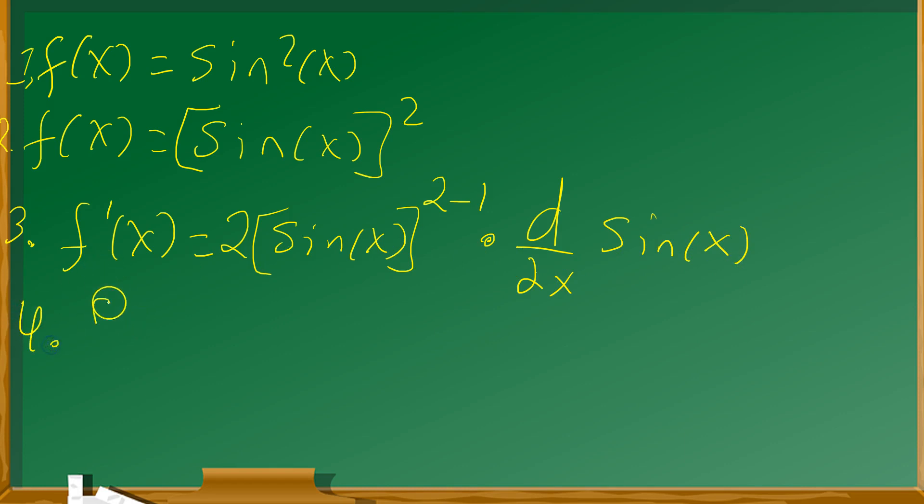You can clean this up a little bit. So f'(x) = 2. Now an exponent of 2 minus 1 is just 1, so you just put down sin(x) for that reason. And the derivative of sin(x) is cos(x), so you write that down next.